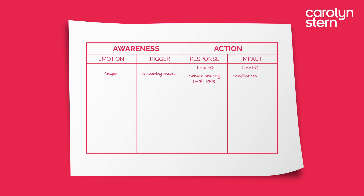You will know your response would escalate the conflict even more and the outcome would not be positive, so write down 'conflict escalated, resulting in a poor outcome' under the Impact column. Now let's write out a high EQ response.